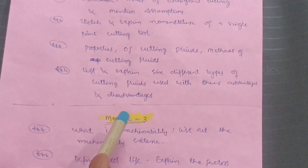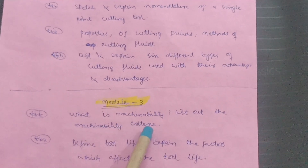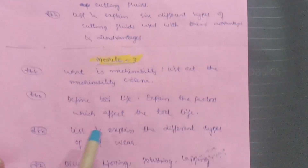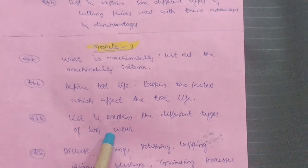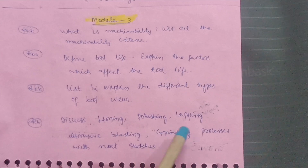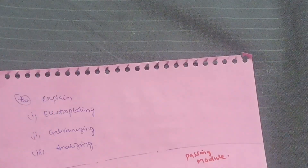In Module 3, cover: what is machinability and list out the machinability criteria, define tool life and explain the factors which affect tool life, and list and explain different types of tool wear. Next, discuss honing, polishing, lapping, abrasive blasting, and grinding processes with neat sketches. Also explain electroplating, galvanizing, and anodizing. Focus on this content to cover Module 3.